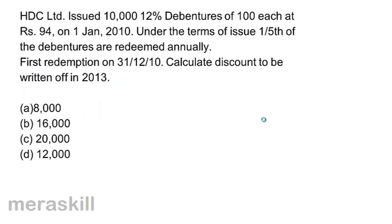HDC Ltd issued 10,000 12% debentures of Rs. 100 each at Rs. 94 on 1st January 2010. Under the terms of issue, one-fifth of the debentures are redeemed annually, with the first redemption on 31-12-2010. Calculate the discount to be written off in 2013. A. 8,000  B. 16,000  C. 20,000  D. 12,000.